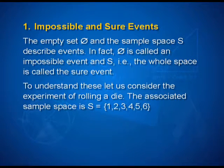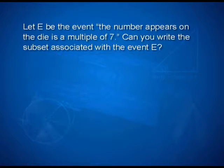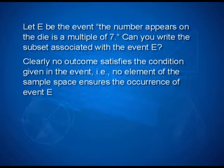In fact, phi is called an impossible event and S, the whole space, is called a sure event. To understand these, consider the experiment of rolling a die. The associated sample space is S = {1, 2, 3, 4, 5, 6}. Let E be the event that the number appearing on the die is a multiple of 7. Clearly, no outcome satisfies this condition — no element of the sample space ensures the occurrence of event E. Thus, the empty set corresponds to event E. In other words, it is impossible to have a multiple of 7 on the upper face of the die.